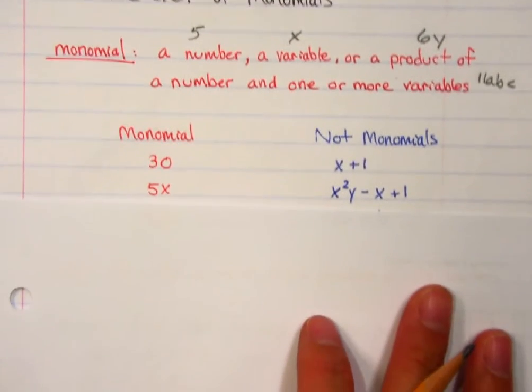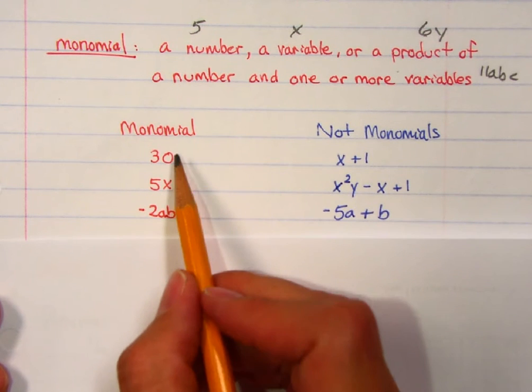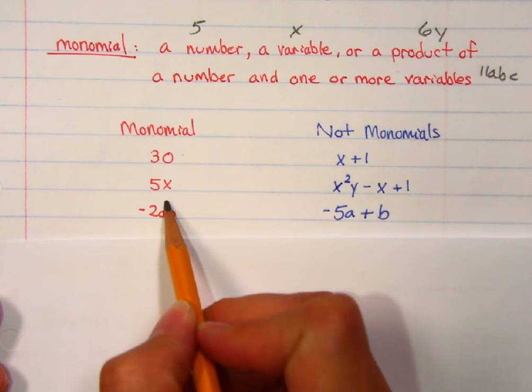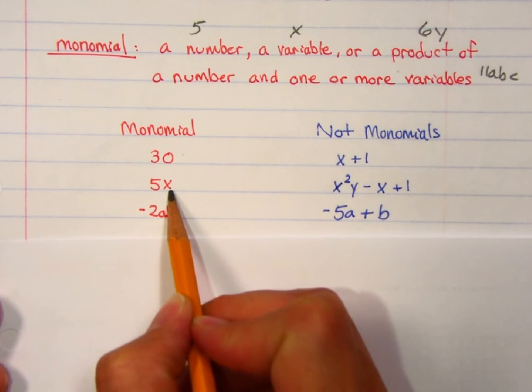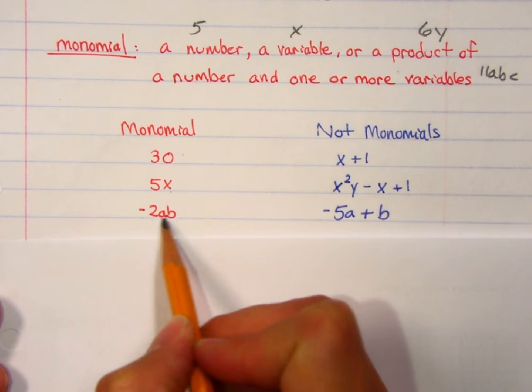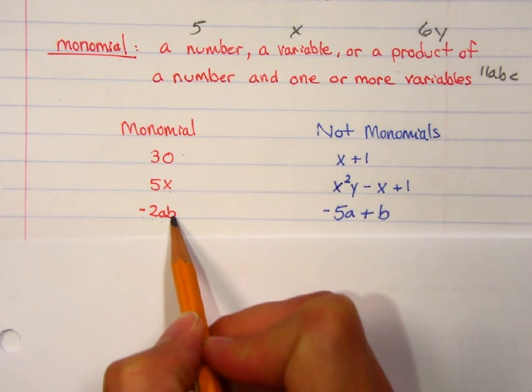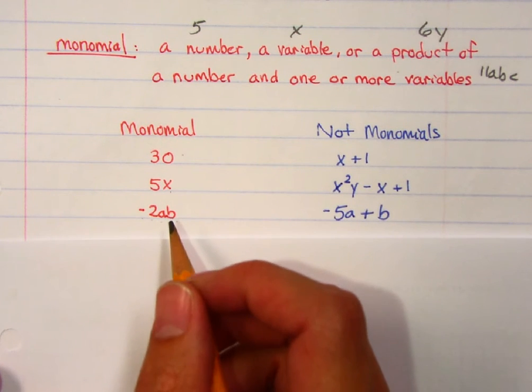Here are some examples of monomials and non-monomials. So monomial, 30, that's just a number. 5x, that's a product of a number and a variable. Negative 2ab, that's a product of a number and two variables. Monomials, so those are all considered monomials.